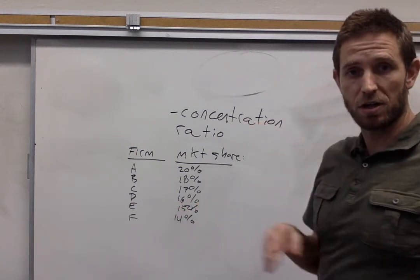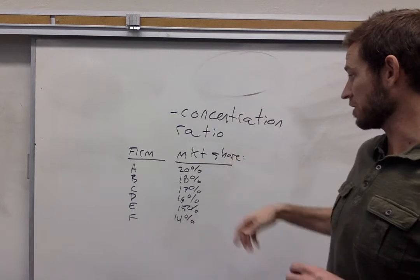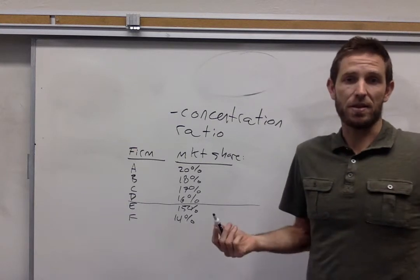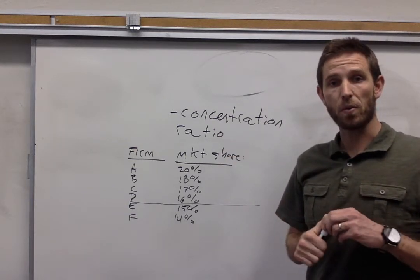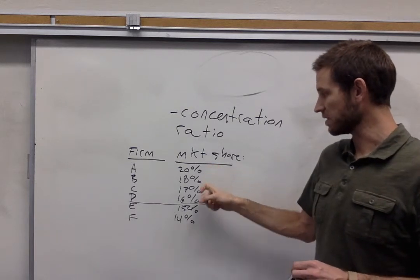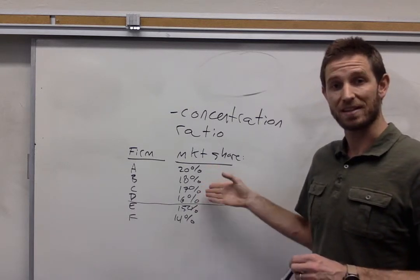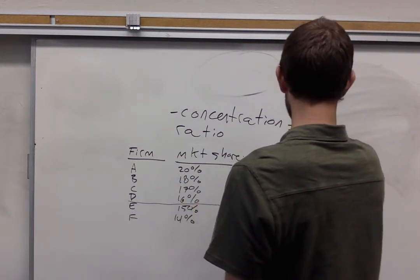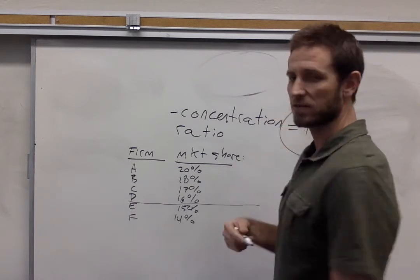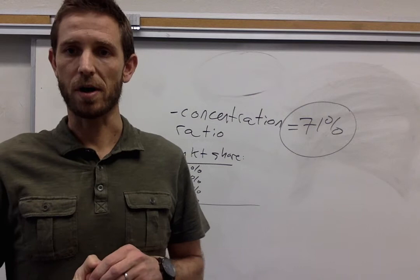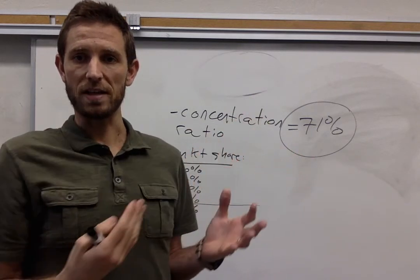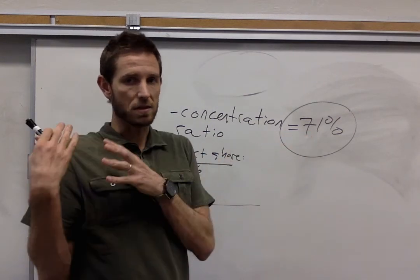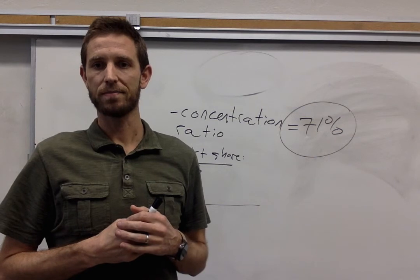When calculating the concentration ratio, you want to find that market share for the four biggest firms, looks like A, B, C, and D, and then add them together. And so for the simple example that we've got here on the board, if you were to add together the 20%, the 18%, the 17%, and the 16% of those four biggest firms, that concentration ratio would be 71%. And so then this would be used in comparison to other markets. You can say that this market would be either more or less concentrated than another one, depending upon what the 71 looked like relative to the concentration ratio in another market. So there you go.